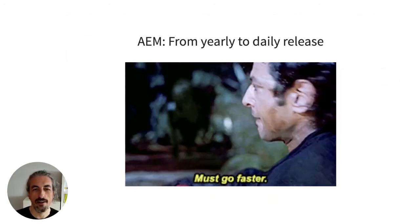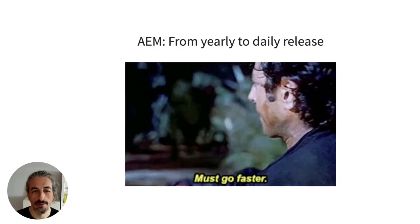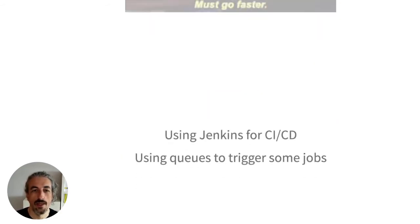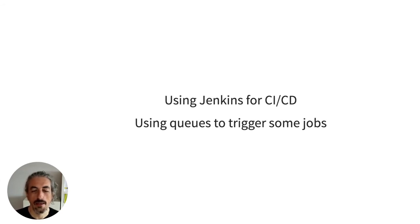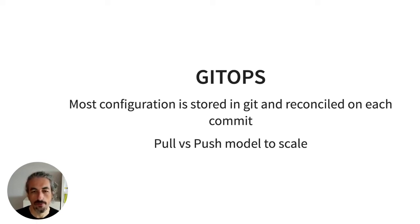For continuous delivery, we moved from yearly releases on the non-cloud version to daily releases on Kubernetes. We use Jenkins mostly for CI/CD, with some queues to trigger jobs. All configuration is stored in GitHub, reconciled on each commit, and we use a pull-based model rather than push — so instead of Jenkins pushing configuration to all clusters and namespaces, services inside the cluster pull the configuration and do reconciliation themselves, which scales much better.